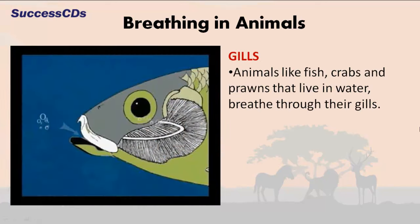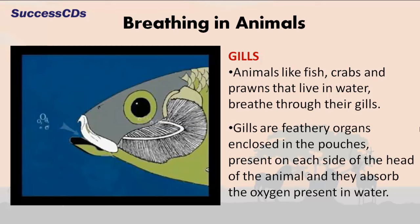Animals like fish, crabs and prawns that live in water breathe through the gills. Gills are feathery organs enclosed in pouches present on each side of the head of the animal, and they absorb the oxygen present in water.